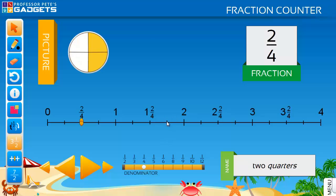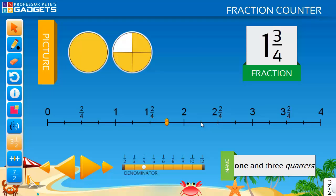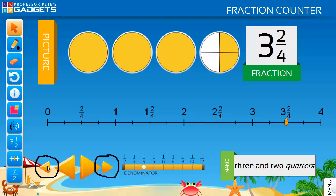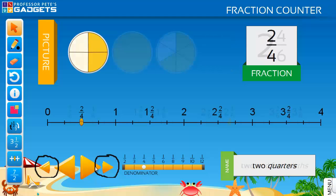Alternatively, jump the marker to the desired mixed number by simply clicking on the number line. Count forwards or backwards in whole ones by clicking on the smaller double arrow.